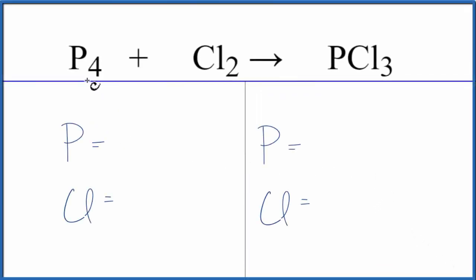In this video, we'll balance P4 plus Cl2 yields PCl3. Let's count the atoms up on both sides of the equation. Four phosphorus atoms and two chlorine atoms. On the product side, one phosphorus and three chlorine atoms.